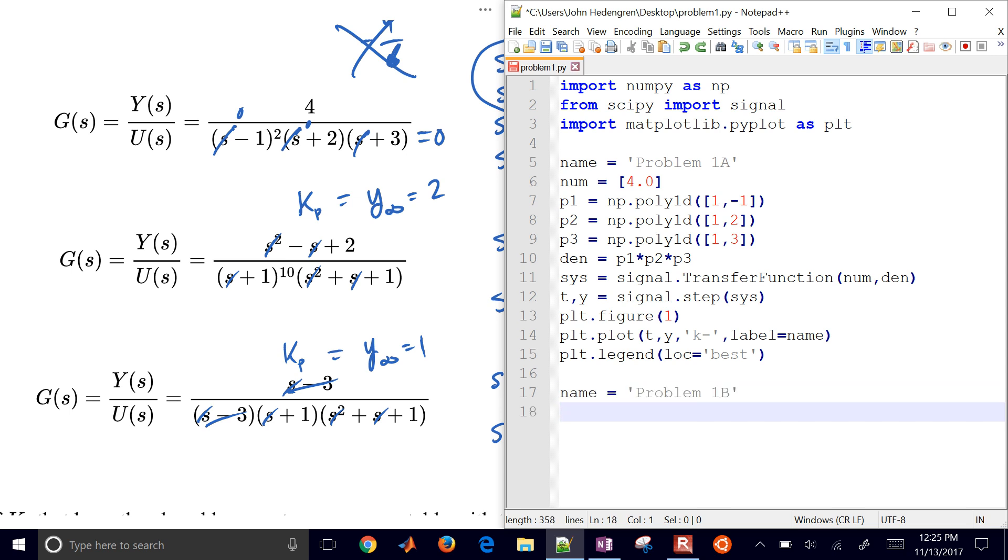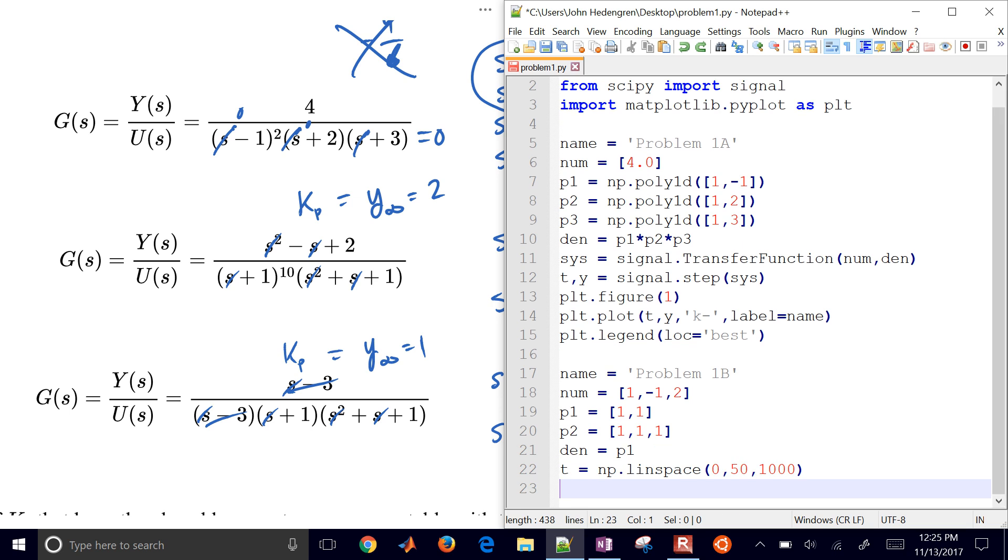Let's go and do the second one as well, just modifying this one. Now this one has s plus 1 to the 10th, so I'm going to use it a different way than the poly 1d now. And I'll have my p1 is s plus 1. And then p2 is going to be 1, 1, 1 for the s squared plus s plus 1.